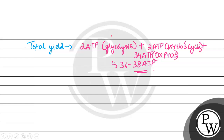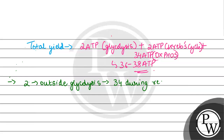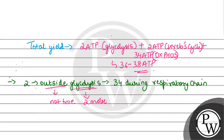Now let's evaluate the given options. Option A says 2 are produced outside glycolysis and 34 during the respiratory chain. This option is incorrect because it states that the 2 ATP molecules are produced outside glycolysis — which is not true. In fact, glycolysis itself produces those 2 molecules. So option A is incorrect.